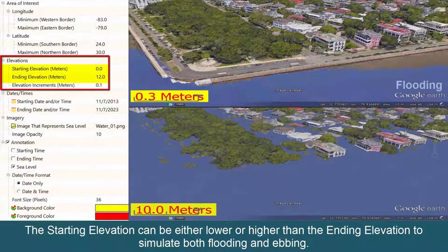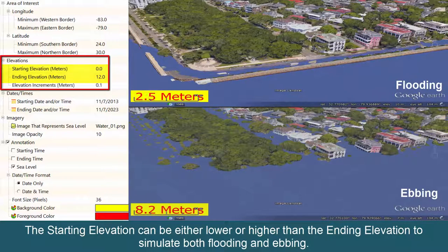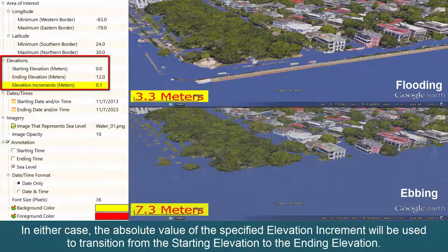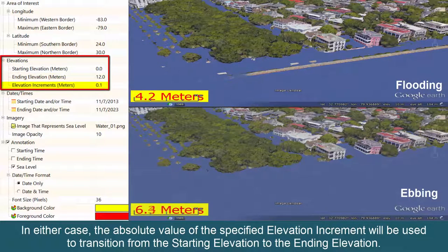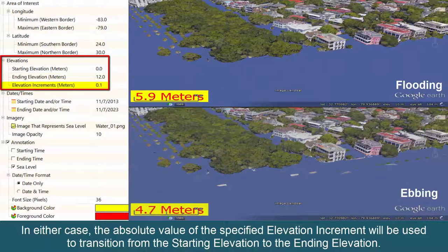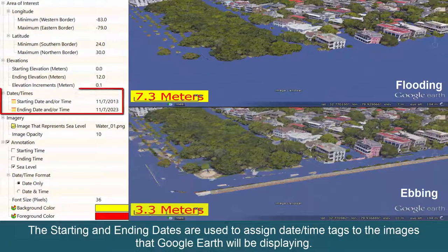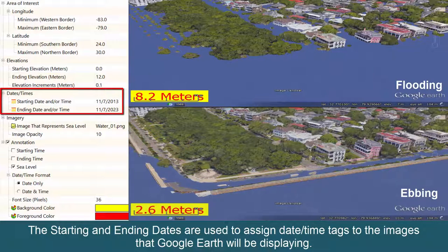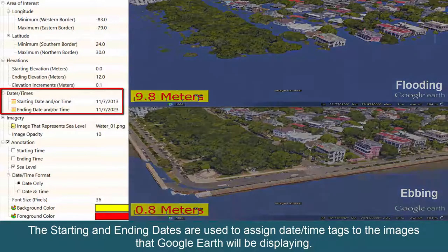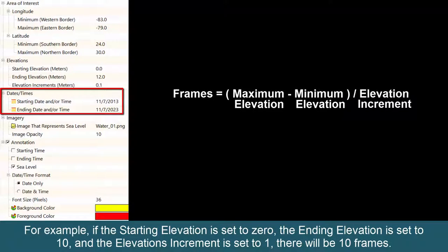The starting elevation can be either lower or higher than the ending elevation to simulate both flooding and ebbing. In either case, the absolute value of the specified elevation increment will be used to transition from the starting elevation to the ending elevation. The starting and ending dates are used to assign date-time tags to the images that Google Earth will be displaying. For example, if the starting elevation is set to zero, the ending elevation is set to ten, and the elevation increment is set to one, there will be ten frames.